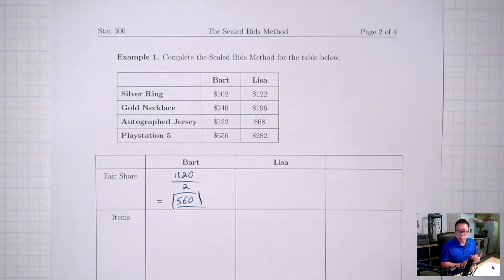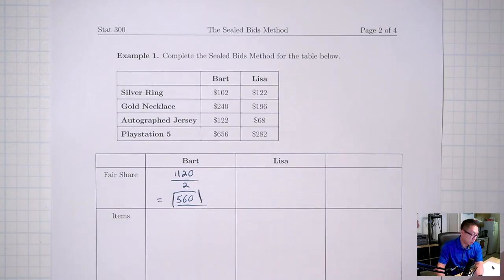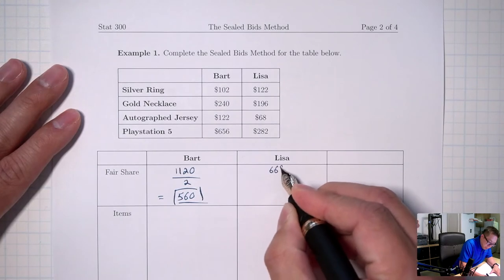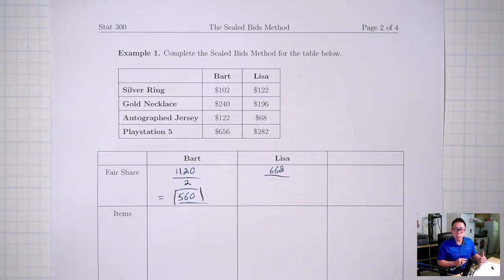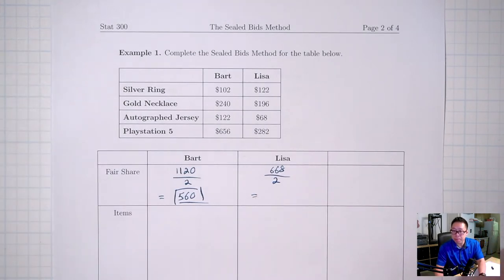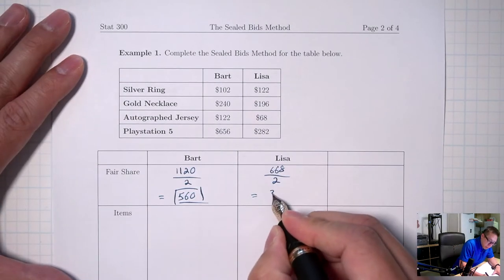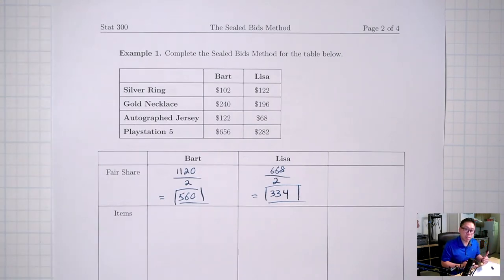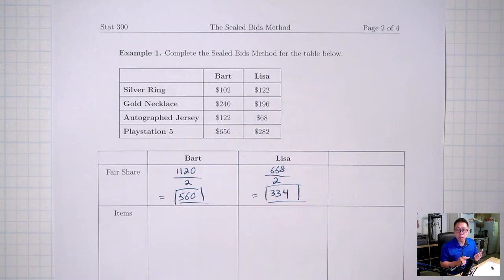Same thing for Lisa. In her eyes, the items together are worth 122 + 196 + 68 + 282 = 668. Divided by two because there are two people: 668 ÷ 2 = 334. So in Lisa's eyes, everything together is worth $668 and she deserves $334 worth of items.